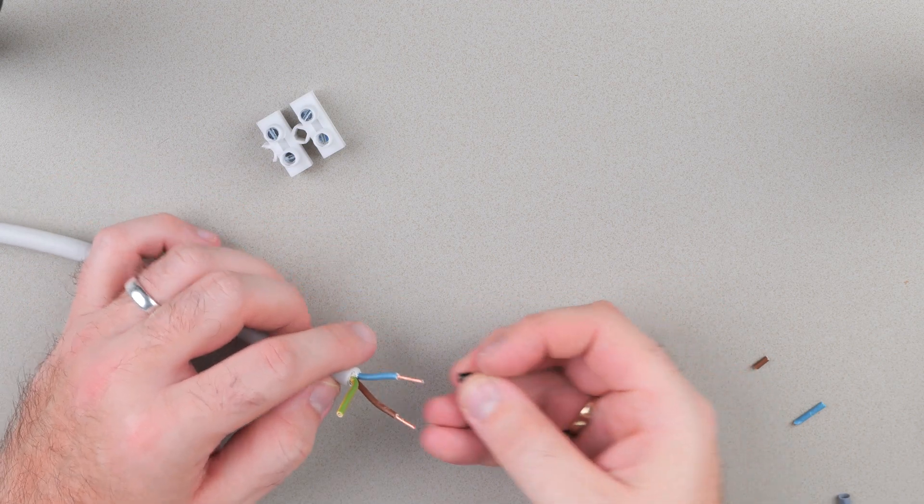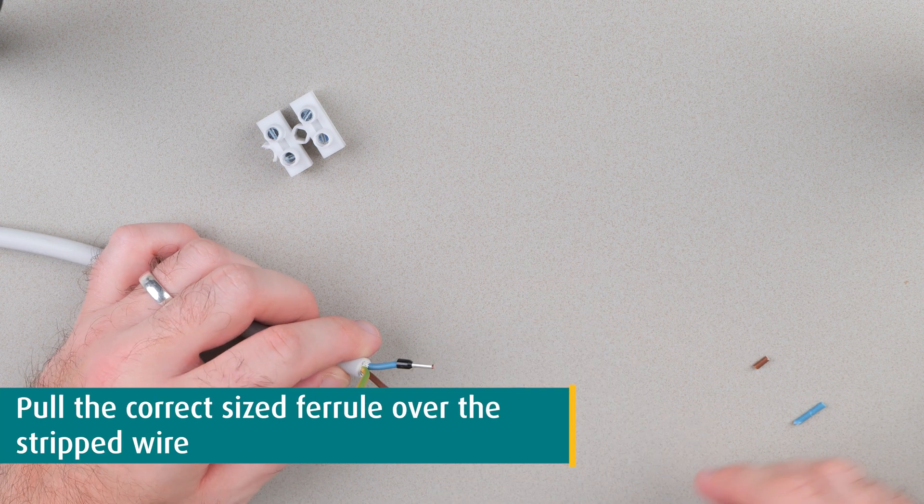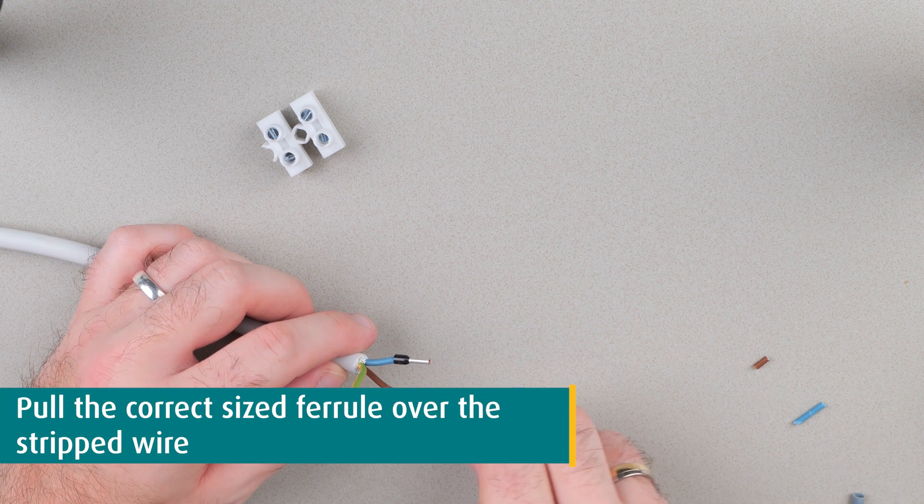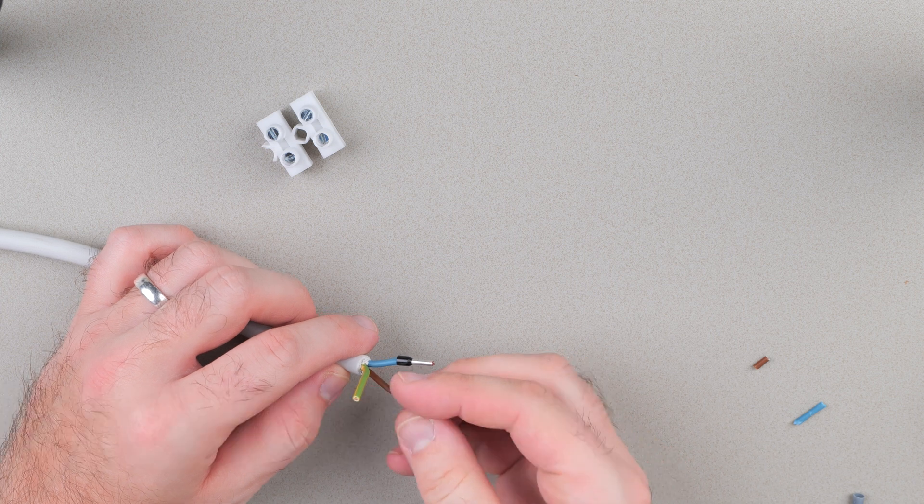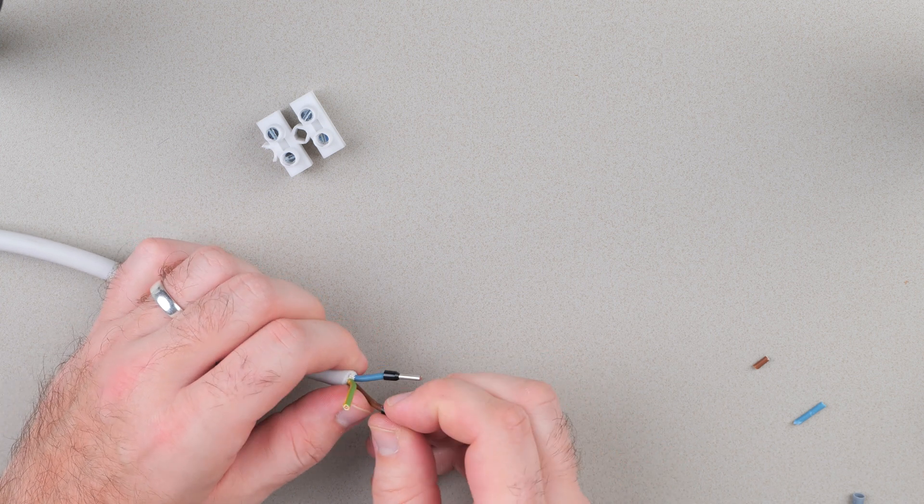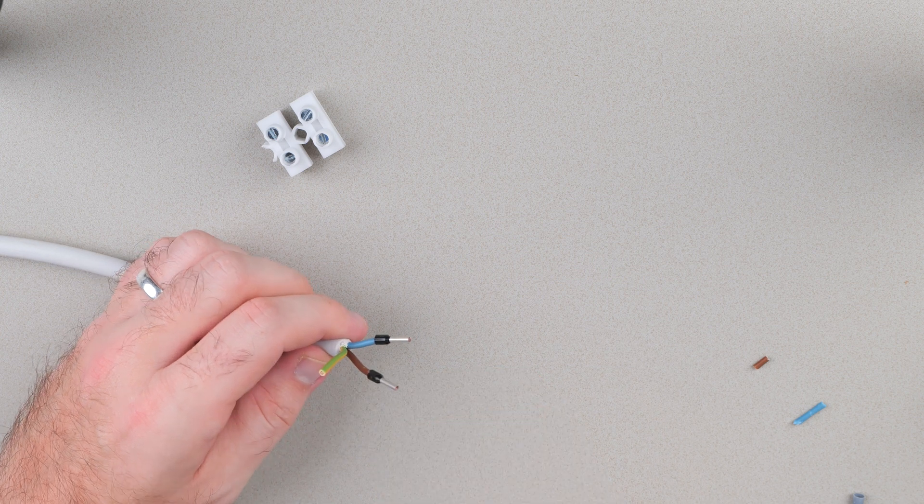Pull the ferrule over the wires so the stripped wires have contact to the conductive metal of the ferrule. Do not twist the wires because this will change the cross section and may damage them. Best is to just make sure that they are all straight.